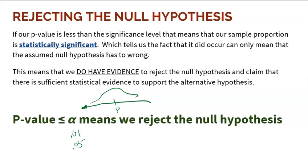Think about the criminal court case analogy. If a person is saying 'I'm not guilty,' but all the evidence shows that they did it, what's the probability all this evidence is pointing toward them and they're still innocent? The probability is very unlikely. So we reject their claim of innocence — we reject the null hypothesis.